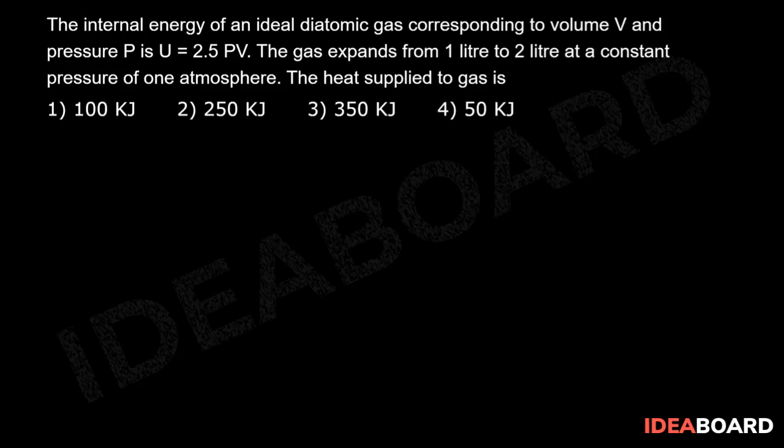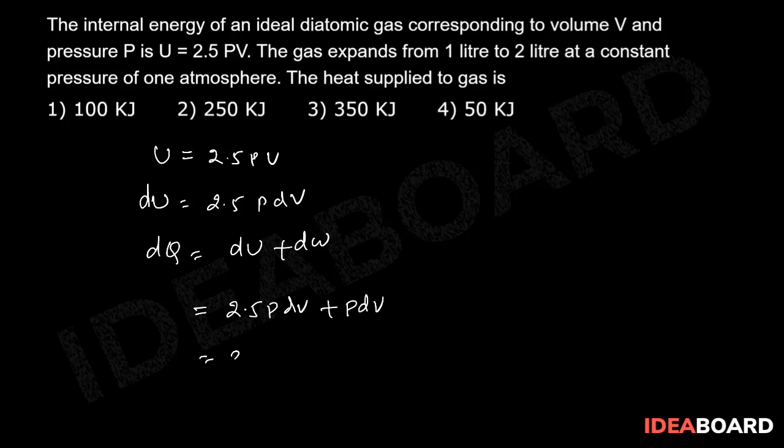Given that U = 2.5 PV, therefore dU = 2.5 PdV. According to the first law, dQ = dU + dW, which equals 2.5 PdV + PdV, which equals 3.5 PdV.